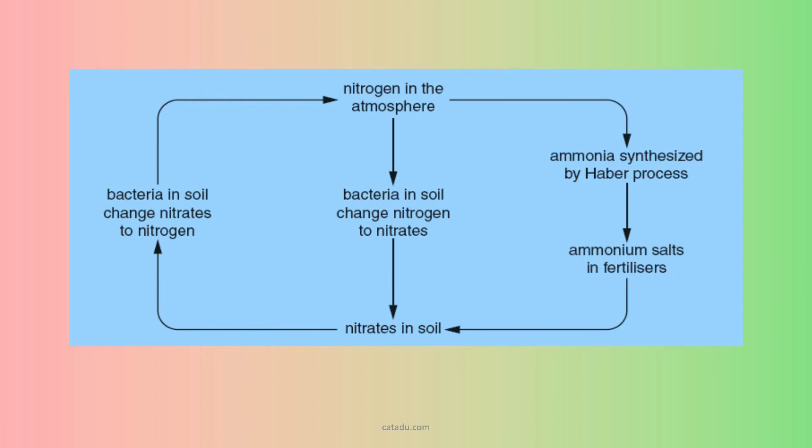One is artificial. By the Haber process, we make ammonia. Ammonia to ammonium fertilizer and make nitrate.